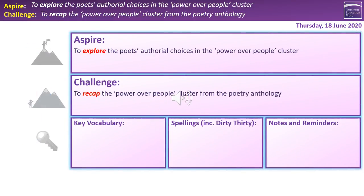That brings us to the end of our lesson. Hopefully you all feel you've achieved the challenge of recapping the power over people cluster, and many of you will feel you also managed the Aspire outcome of exploring the poets' authorial choices — though we've been leaning heavily on My Last Duchess by Browning. Thank you very much for your time today, and I will see you in our next session.